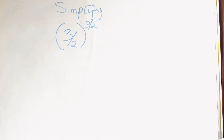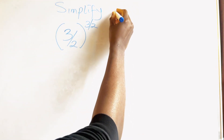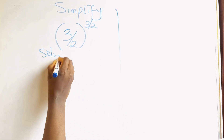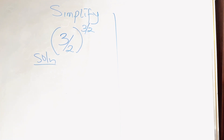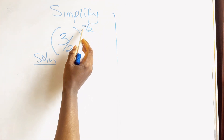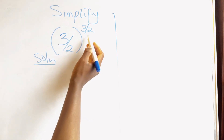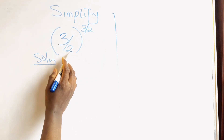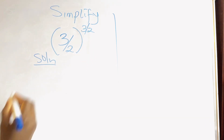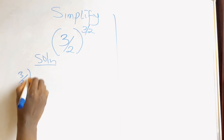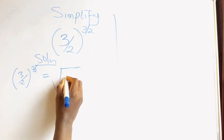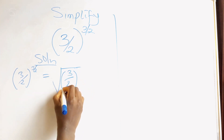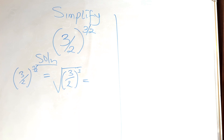Let's begin. From our previous lessons, we know this 3 here stands for power, while this 2 stands for root. Which means we're going to take the square root of 3 over 2 raised to power 3. So, 3 over 2 raised to power 3 over 2 is the same thing as the square root of 3 over 2 raised to power 3. This is the first step.